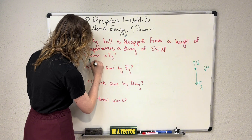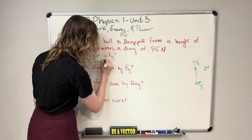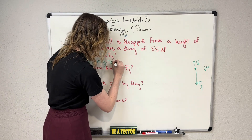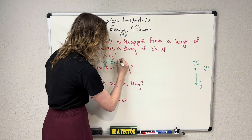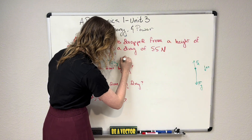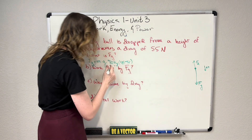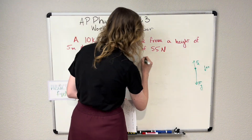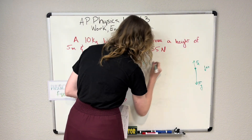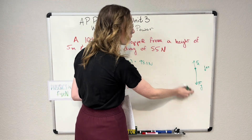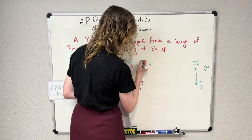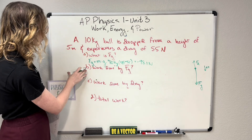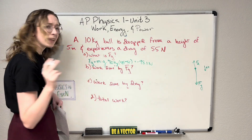We know that the force due to gravity is equal to the mass of our object times the acceleration of gravity g. The mass of our object is 10 kilograms and the acceleration due to gravity is 9.81 meters per second squared. So 10 kilograms times 9.81 meters per second squared gives us 98.1 newtons. But this is negative 98.1 newtons because this is pulling downward in the negative direction.